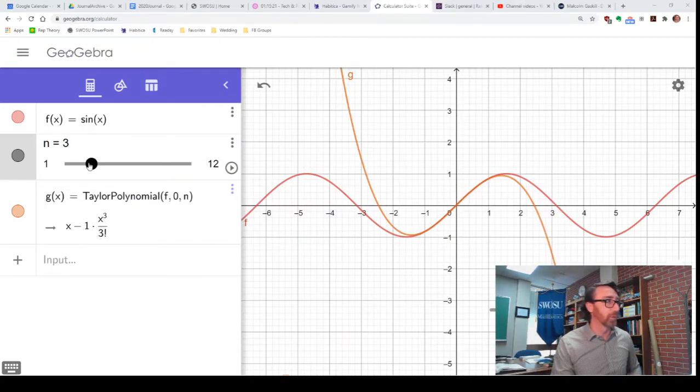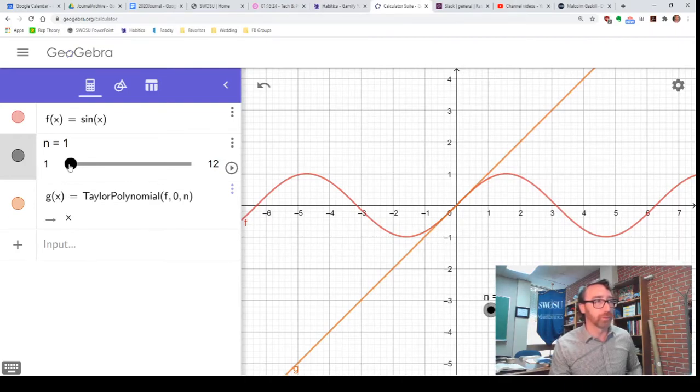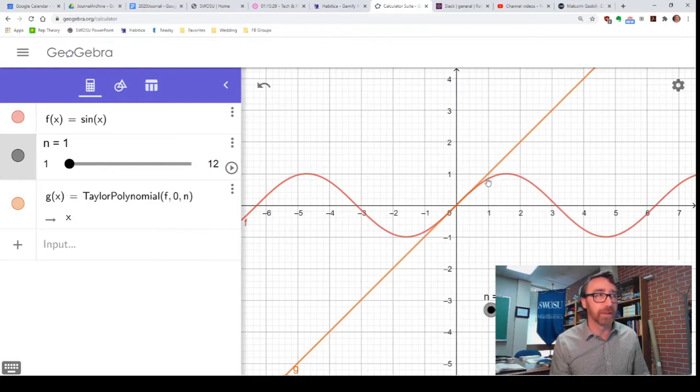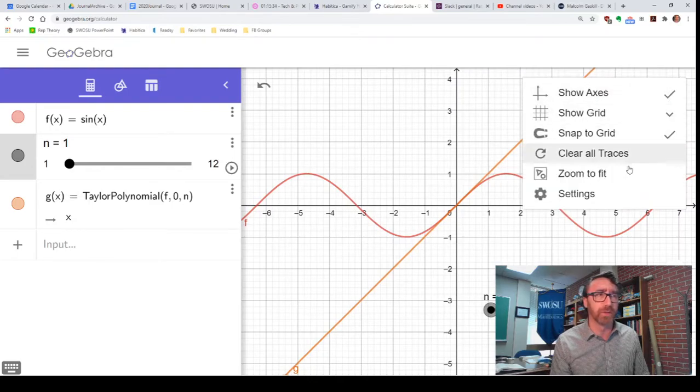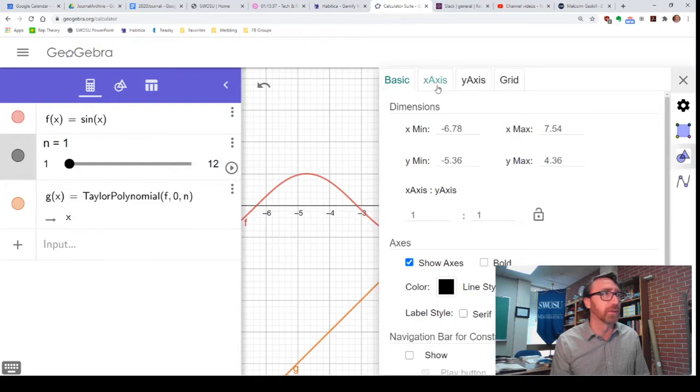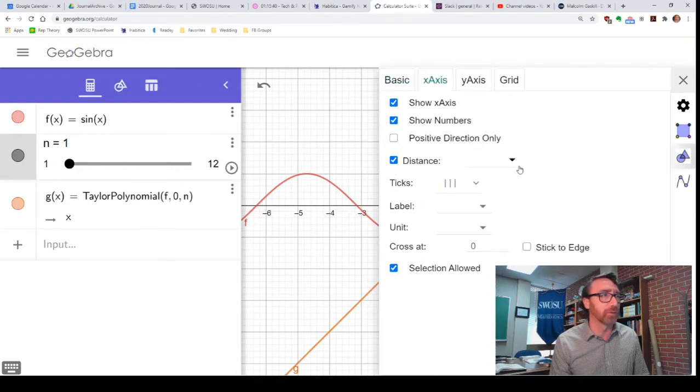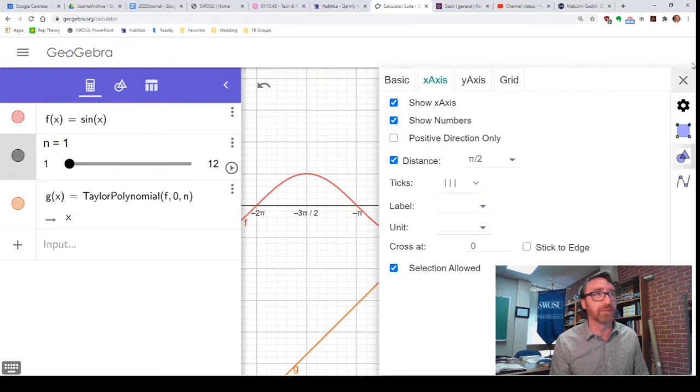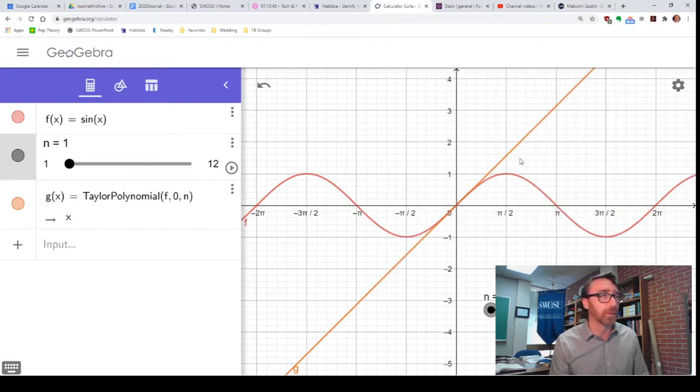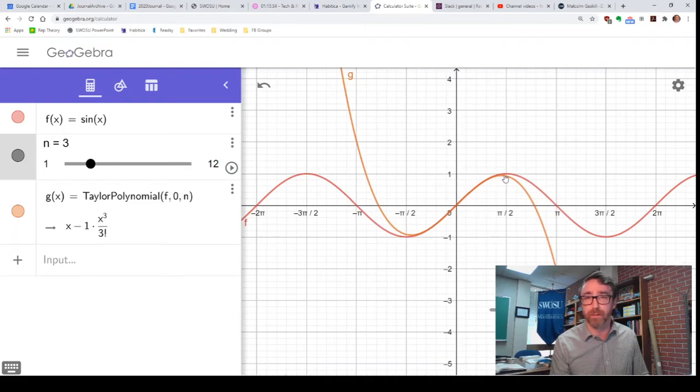So there's our minus 1x cubed over 3 factorial. Notice what's happening here. That's our original function. Notice that it starts to separate from the graph quite substantially before x equals 1. Since I'm dealing with a trig function, since I'm dealing with sine, let me change this here. My x-axis, I want tick marks every pi over 2 units. That's a neat feature of GeoGebra. So notice it starts to deviate pretty substantially even right here. But if I go to my third degree approximation, notice it's better. It's matching the graph of the function for even longer.